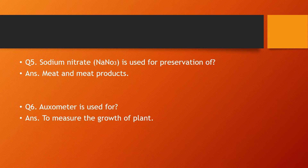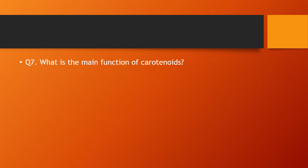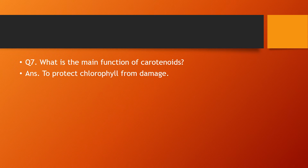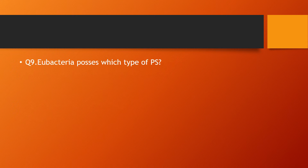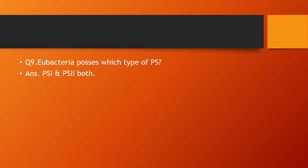Sixth question: oxo meter is used for — the answer is to measure the growth of plants. Seventh question: what is the main function of carotenoids? — the answer is to protect chlorophyll from damage. Eighth question: name of Indian rice beer — the answer is saunti beer. Ninth question: eubacteria possess which type of photosystem? — the answer is photosystem one and two both.